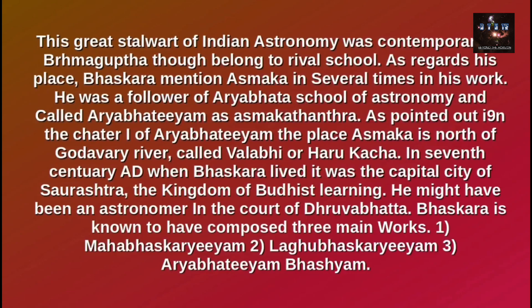Bhaskara 1 mentioned Asmaka several times in his work. He was a follower of Aryabhata's school of astronomy and called the Aryabhatiyam the Asmaka Tantra. As pointed out in Chapter 1 of the Aryabhatiyam, the place Asmaka is north of the Godavari river in India, called Valabhi or Harukaccha. In the 7th century AD when Bhaskara lived, it was the capital city of Saurashtra, the Kingdom of Buddhist Plani.